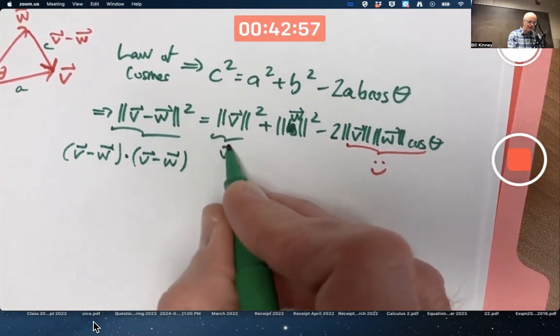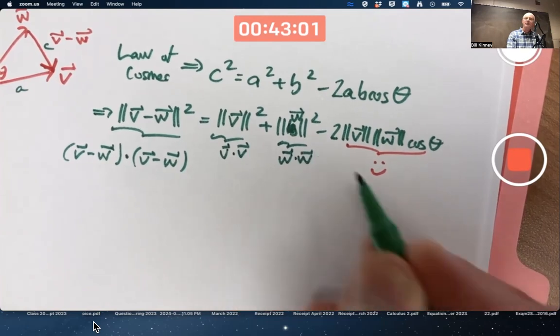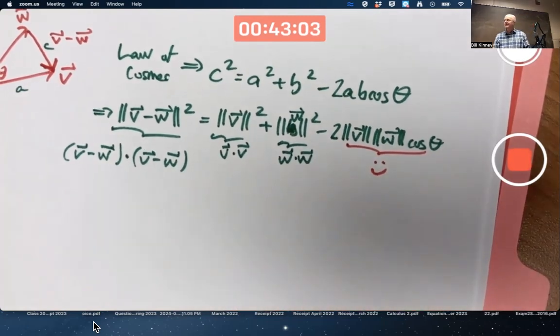This is the same as V dotted with itself. This is the same as W dotted with itself. That's how we get the dot products in there. A bunch of simplification must happen somehow.